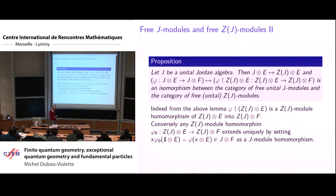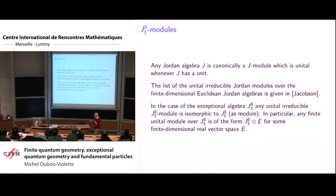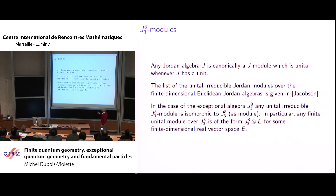This is something very convenient, and I expect this theorem has a generalization. Now there is a particular feature of the exceptional algebra: the list of unital irreducible Jordan modules over itself is just itself. All Jordan modules are free and are tensor products of the exceptional algebra with some real vector space — which is not the case for the other Jordan algebras on the list, where there are many different kinds.